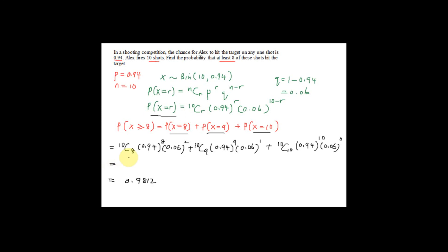You can find the answer one by one: the first term is 0.09875, plus the second term 0.34380, plus the last term 0.53862. This equals 0.9812.